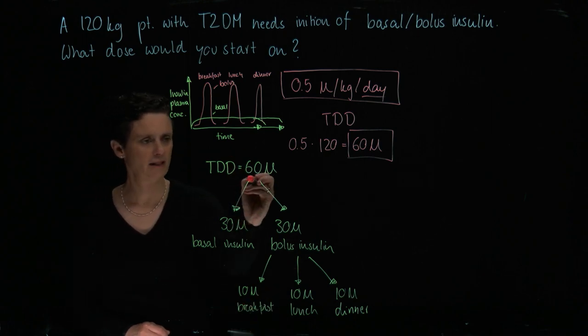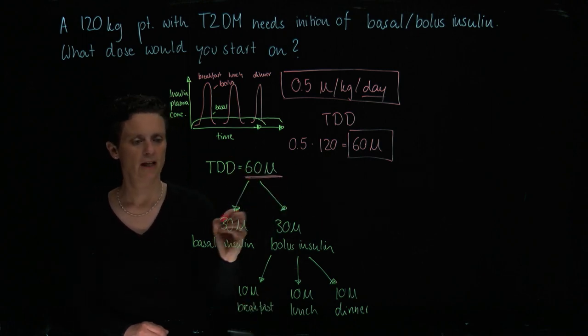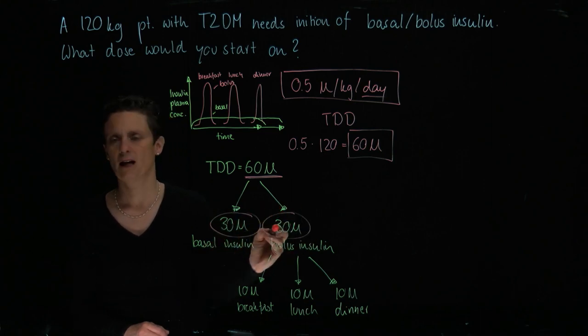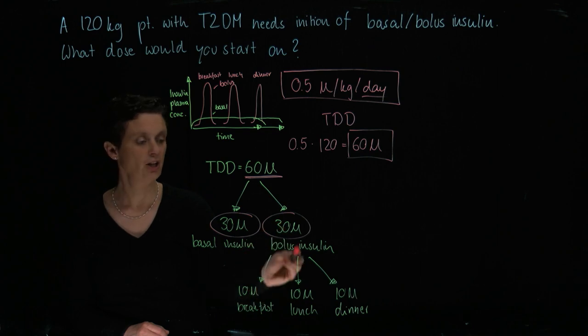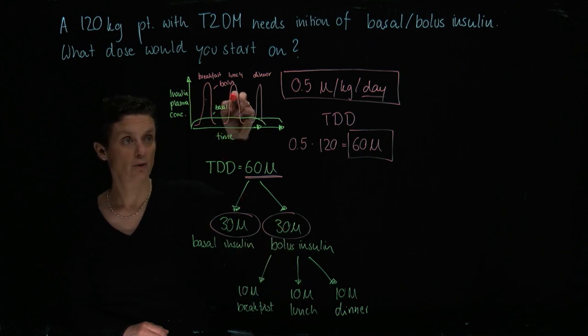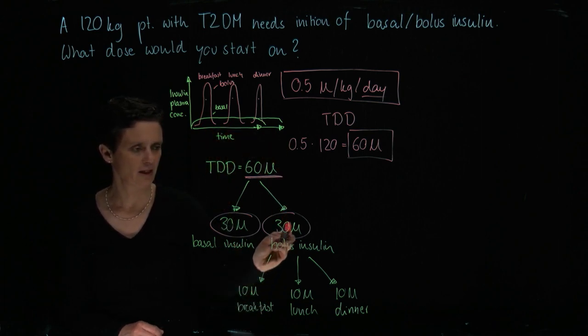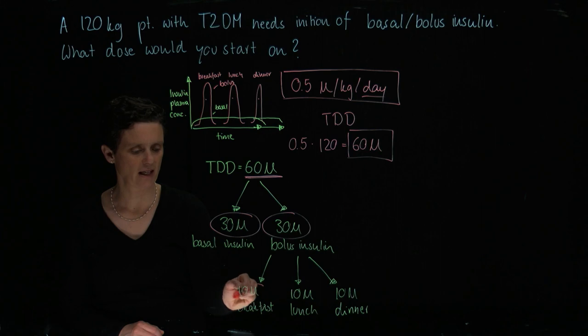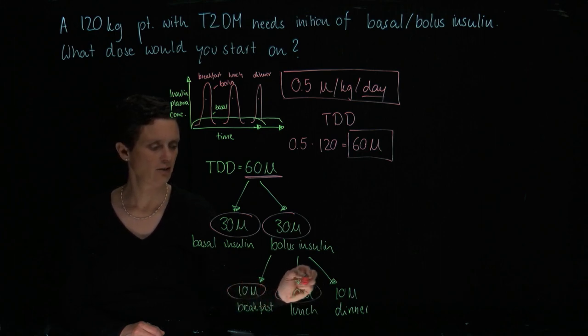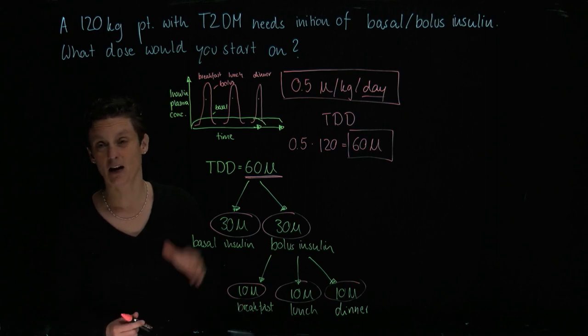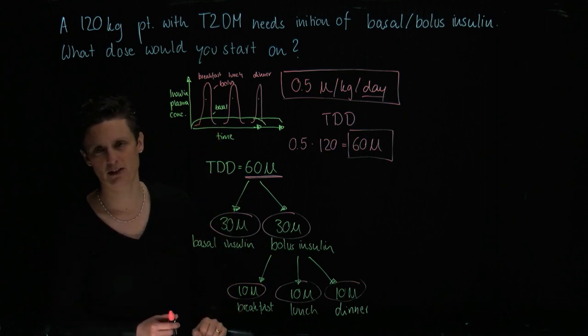Then we split up this total daily dose in halves: give half to the basal, half to the bolus, which is going to make 30 each. The bolus we need three times typically each day. In contrast to the basal, we need just once a day. So 10 units for breakfast, 10 units for lunch, and 10 units for dinner. And that's it. That's how we would get started with this patient.